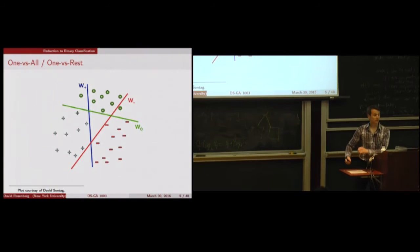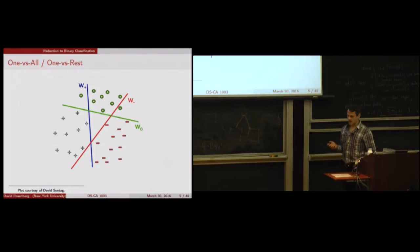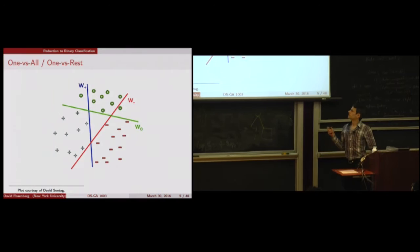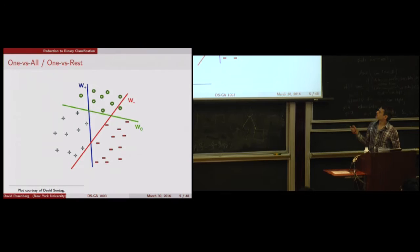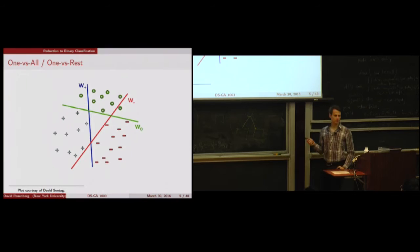It's a simple idea. In this picture, we have three classes: plus, minus, and circle. What we've done is fit three different linear classifiers. Each one separates one class from the rest. So the W0 classifier separates the O's from the pluses and minuses. The minus classifier separates the minuses from the pluses and O's, and so on.